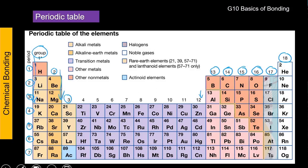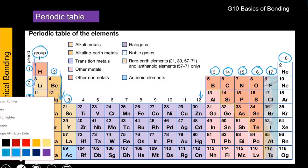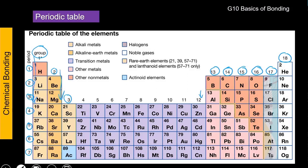So it's just like a maths table. I'm going to change my pen colour so that you can see. Period one is along there, period two is along there, period three along there, and it goes along. Knowing what is a metal and what is a non-metal is really important.